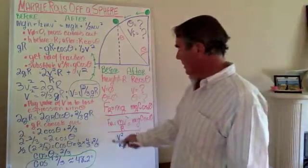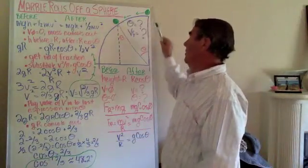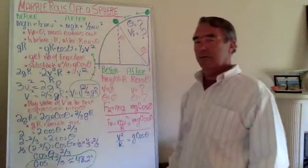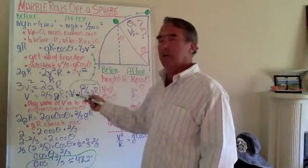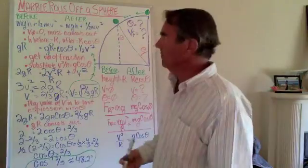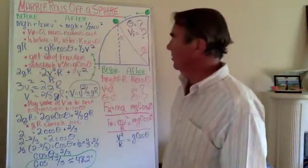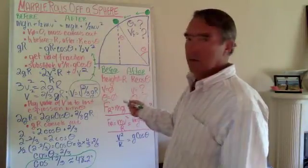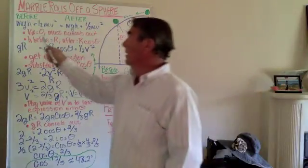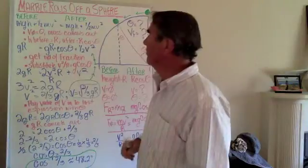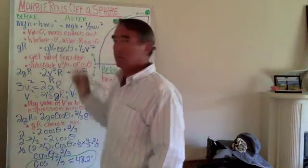Being able to prove this is a critical part of solving the problem — explaining how fast the marble is and where it is when it separates from the surface of the sphere. The second important part is to solve for velocity first and angle theta second. To solve for velocity, take the conservation of energy expression, plug in known values, cross out values that sum to zero, and eliminate values that cancel out. Initial velocity is zero, so the one-half mv² initial term goes away.